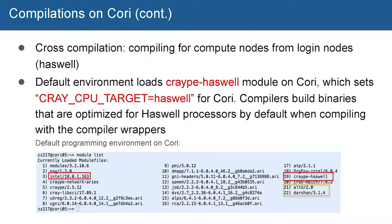When we use compiler wrappers to compile, we are doing cross-compilation. This means you log in to Cori login nodes — those are Haswell nodes — and then compile for compute nodes. We have two types of compute nodes: Haswell and KNL. By default, when you log in to Cori login nodes, you can see the CrayPE Haswell module is loaded. So if you don't do anything, using the compiler wrappers will build a binary optimized for Haswell.